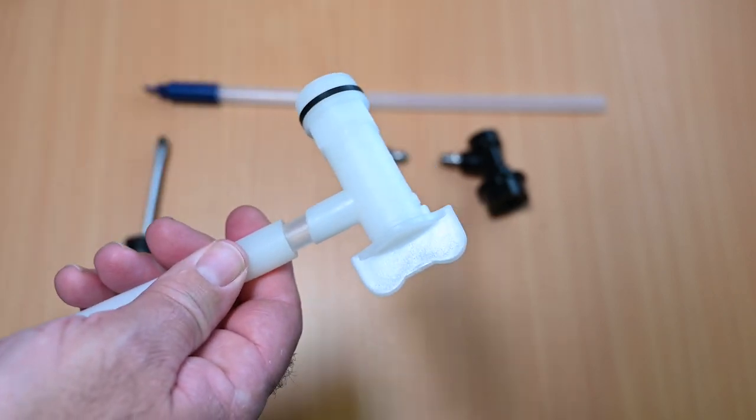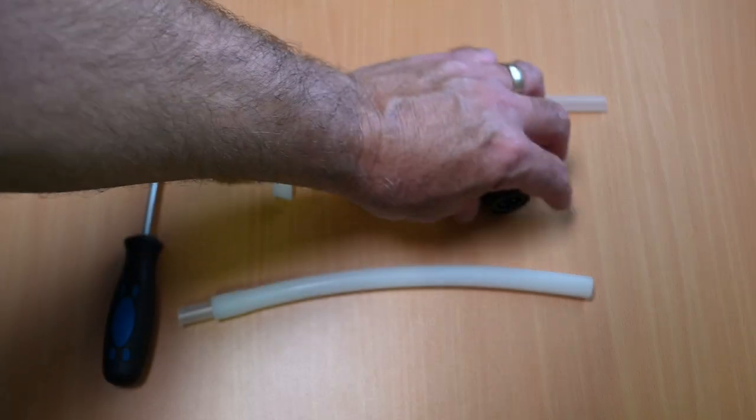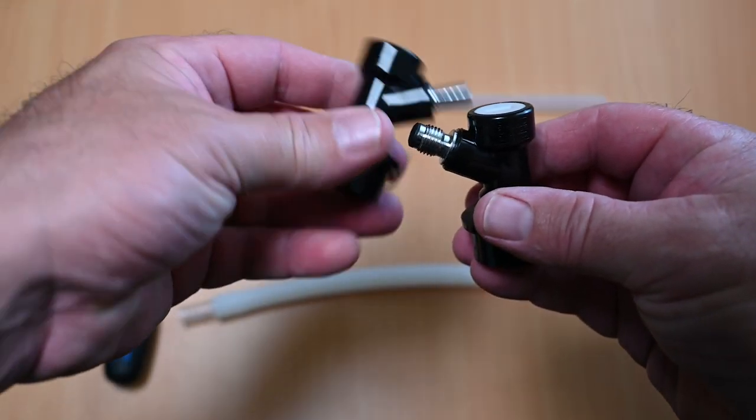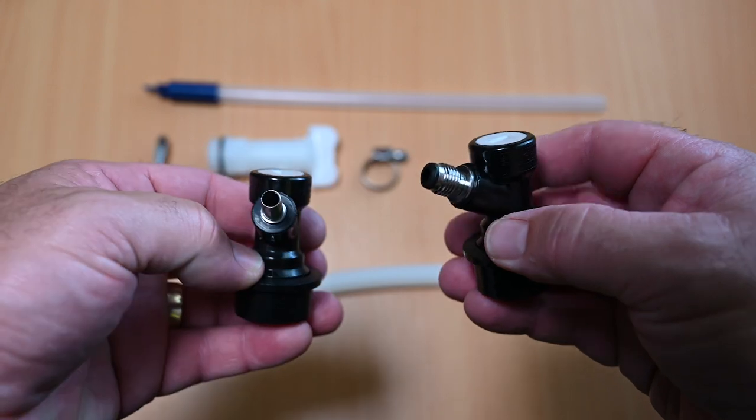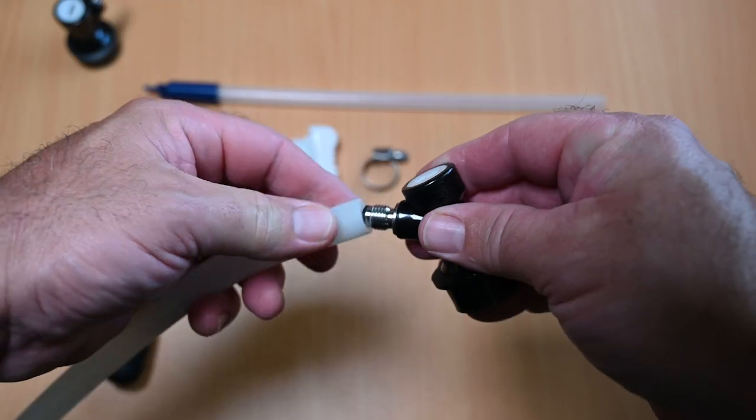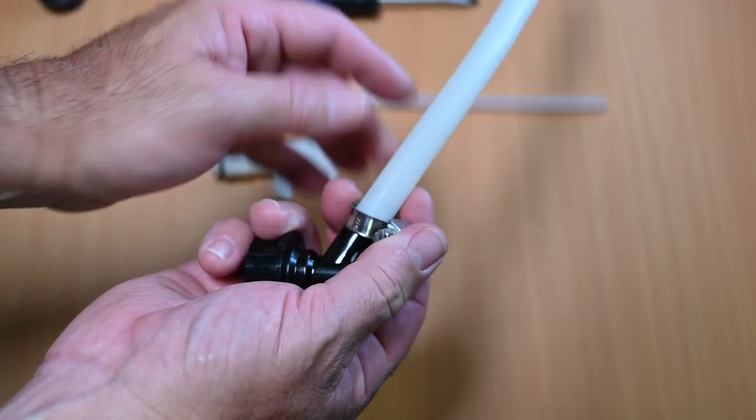At the keg end we're going to need a liquid MFL disconnect. Now the MFL disconnects have a threaded end as opposed to a barbed end for the tubing. You want the threaded end because it's actually about 10 millimeters in diameter and that's going to fit nice and snug at the other end of your silicon hose. All you're going to need then is a hose clamp just to tighten it up to make sure you get no leaks.